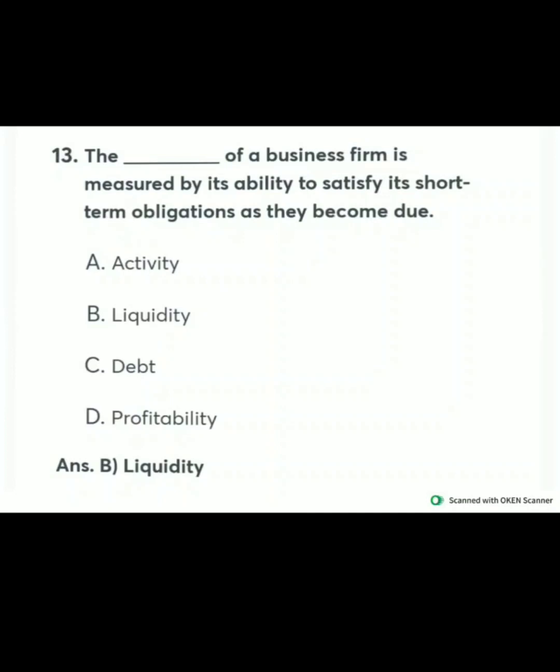The liquidity of a business firm is measured by its ability to satisfy its short-term obligations as they become due. As I already explained about liquidity ratio, option B is correct here.